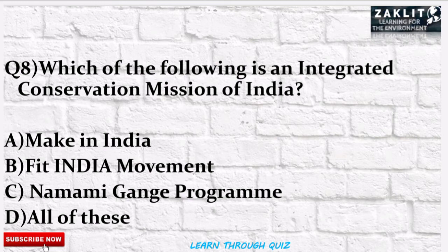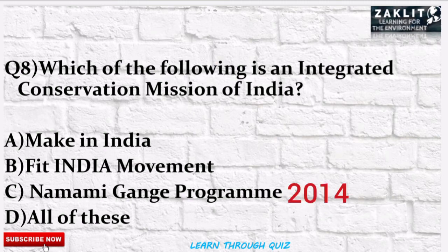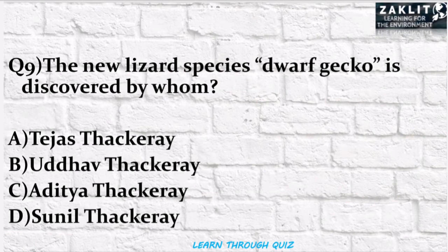The next question was: which of the following is an integrated conservation mission of India? All participants gave the correct answer — option C, the Namami Ganga program, which was started in the year 2014.